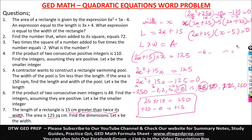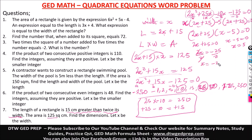Setting each factor to zero: x - 5 = 0 gives x = 5, and 2x + 25 = 0 gives x = -25/2. Since we need positive values, x = 5. So our width is 5. The length is 2(5) + 15 = 10 + 15 = 25. So the length is 25 centimeters and width is 5 centimeters. That's how you solve quadratic equations word problems.